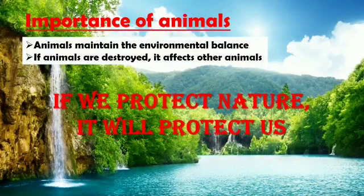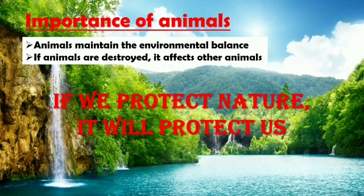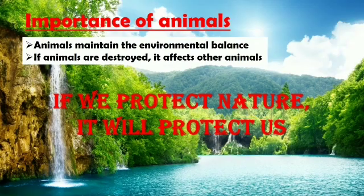Animals maintain the environment balance. If animals are destroyed it affects other animals. For example, if there are no small fishes, there will be no food for sharks, turtles, octopus, etc., and so other animals are affected. As mentioned in the beginning, protection of the environment is our duty. If we protect nature, it will protect us. Here ends your first chapter. Thank you children.